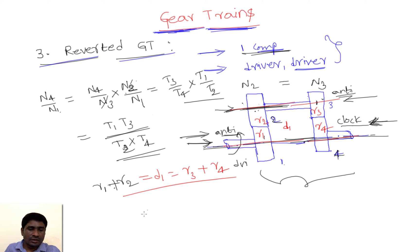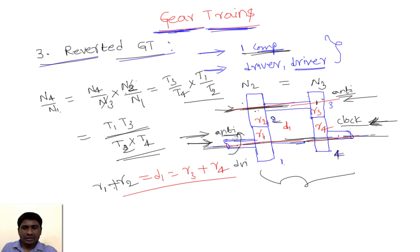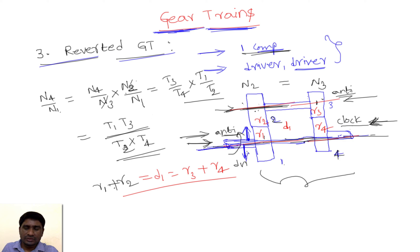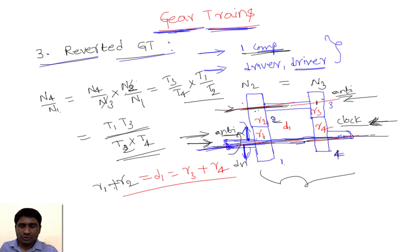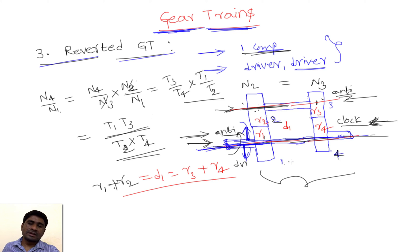An important application of the reverted gear train is in clocks. Because the driver and driven shafts are collinear, if we attach the hours needle to one shaft, we can pass a second concentric shaft through it and attach the minutes needle to that. By using a hollow shaft arrangement, two collinear shafts share the same axis, allowing two hands to be mounted at the same point — which is exactly how clocks are designed.